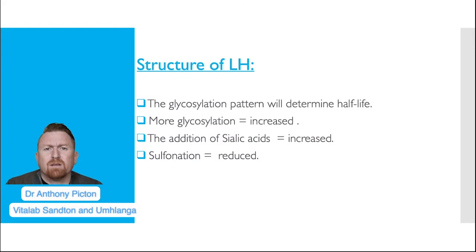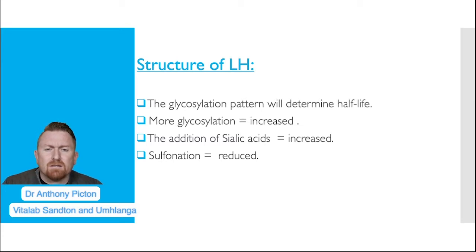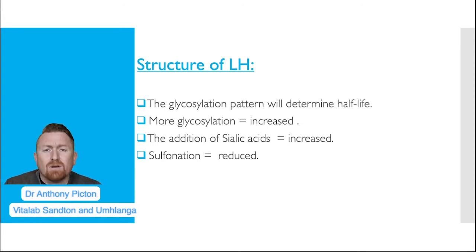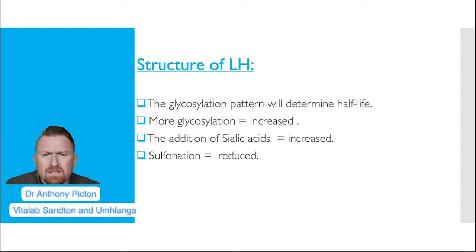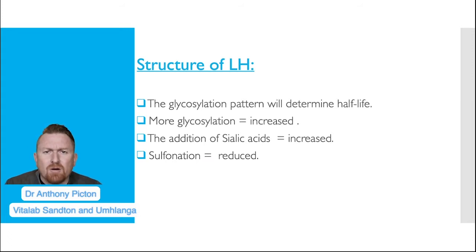When it comes to the structure of LH, we know that it's a heterodimer consisting of an alpha and a beta subunit, and both are glycoproteins. The alpha subunit of LH, FSH, TSH and HCG are all identical and coded for by a single gene on chromosome 6. The beta subunits confer specificity and function, but it's important to realize that the protein backbones — the amino acid sequences — are not where the function lies. It's actually in the carbohydrate moieties, in other words the glycosylation, and we really need to understand that in terms of the difference between LH and HCG.